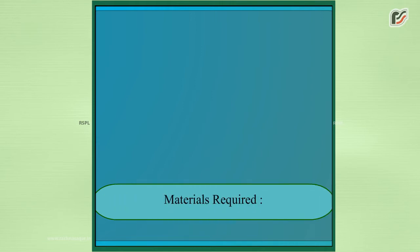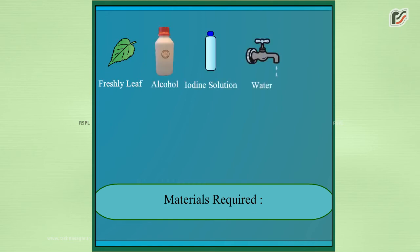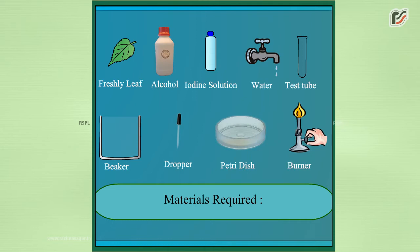Materials required: a freshly plucked leaf, alcohol, iodine solution, water, test tube, beaker, dropper, petri dish, burner.